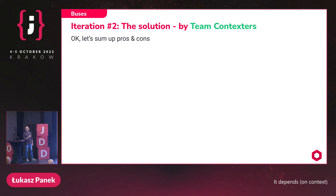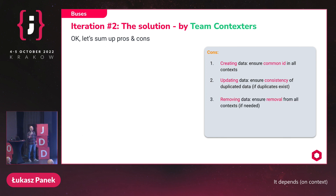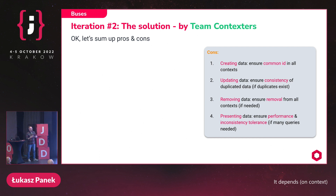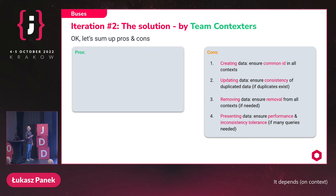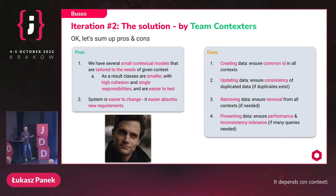Let's sum up the pros and cons of the multi-model approach. Cons: when creating data, you must ensure a common ID across all contexts; when updating, you must ensure consistency of duplicated data; when removing, sometimes data must be removed from all contexts; and when presenting, you need to handle performance and inconsistency tolerance if multiple queries are needed. Pros: you get several small contextual models tailored to the needs of each context — resulting in smaller classes with higher cohesion, single responsibilities, and easier testing. Second advantage: the system is easier to change and better absorbs new requirements.